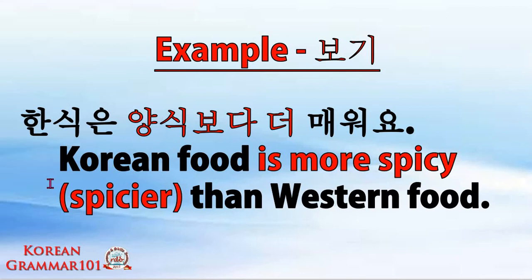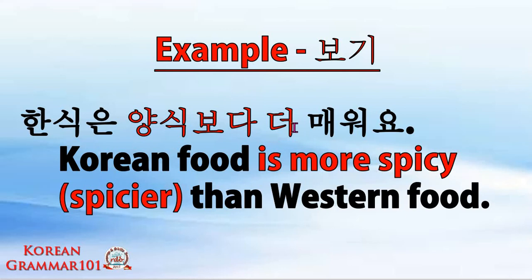Our first example: hanshik means Korean food, and yangshik means Western food, and mewo means spicy. The first noun 한식 (hanshik) ends with a consonant, so the topic marker is 은 (un). We attach 보다 (buddha) to the second noun 양식 (yangshik), then 더 (do), then mewo. In English: Korean food is more spicy — comparing to Western food, which is 보다. So it becomes: Korean food is more spicy than Western food, or Korean food is spicier than Western food.